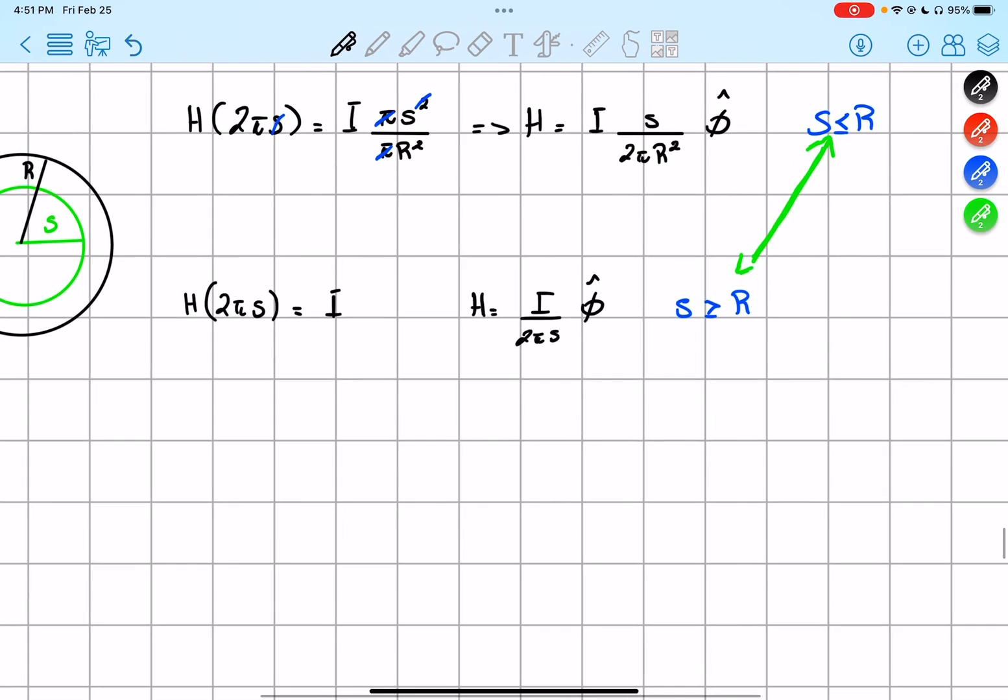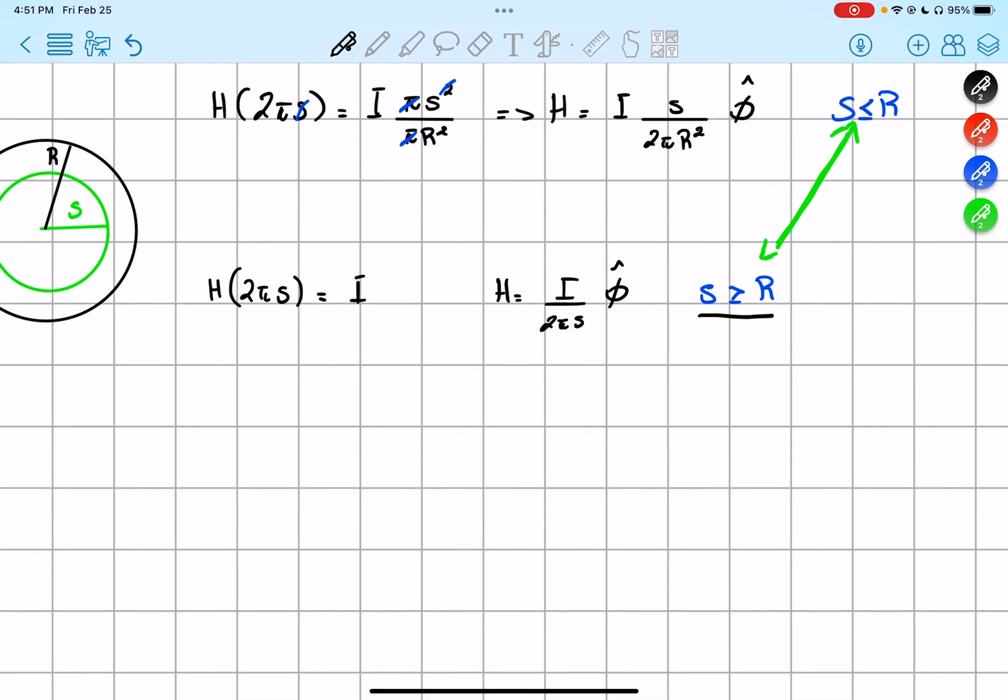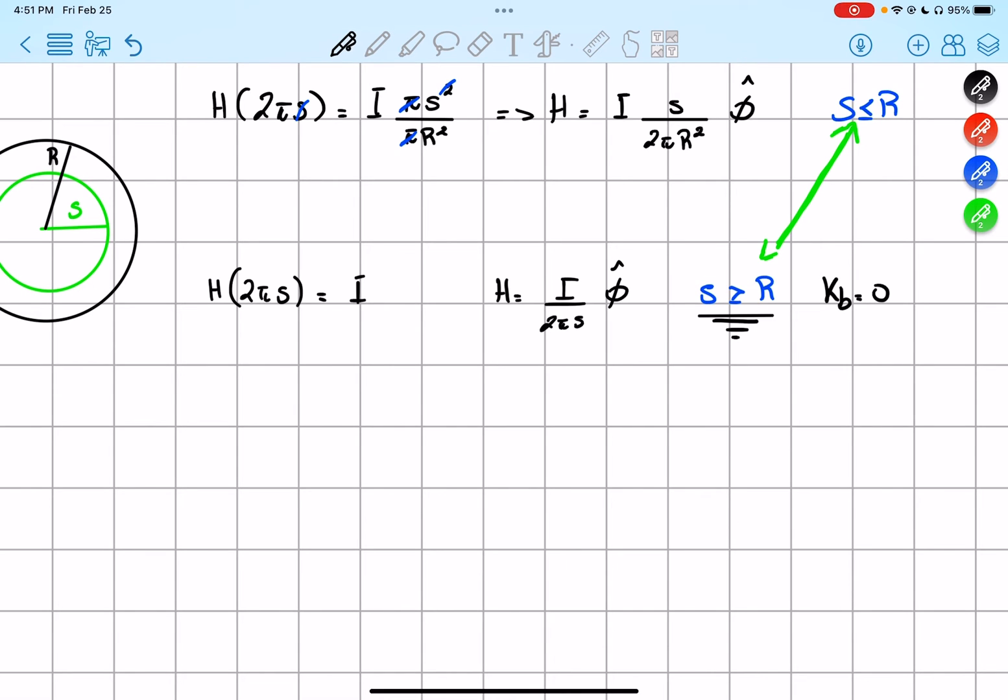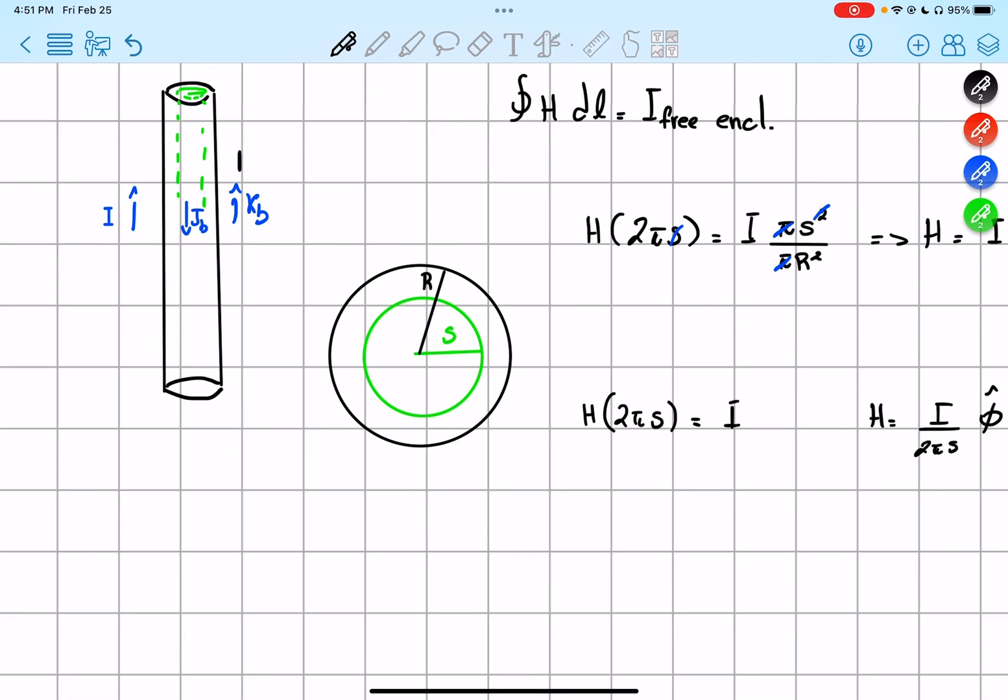Also, one other thing that we can say is, if s is greater than r, so we're outside, there's not going to be any surface charge affecting us. Because, as we said before, the surface charge will be pointing upwards, not outwards.